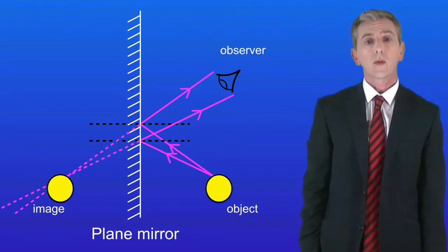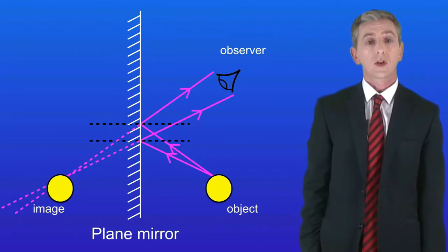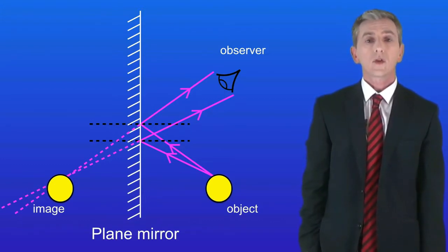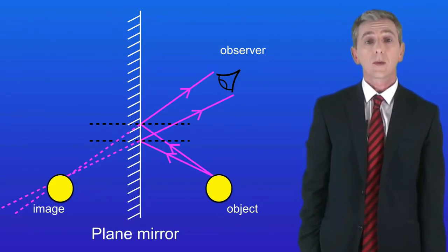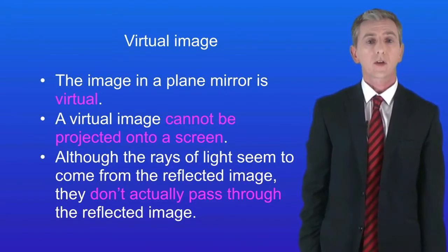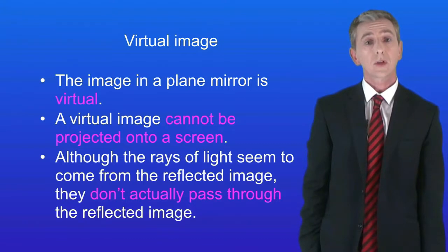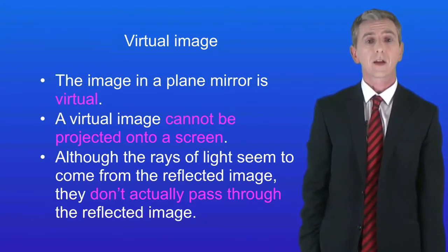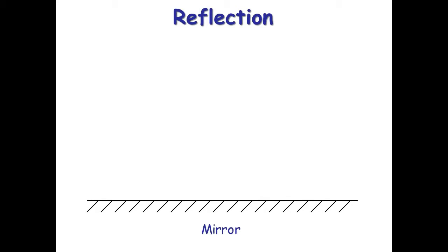There's one really important point about the image in a plane mirror: scientists call this a virtual image, because the image is behind the mirror. A virtual image cannot be projected onto a screen. That's because although the rays of light seem to come from the reflected image, they do not actually pass through it.